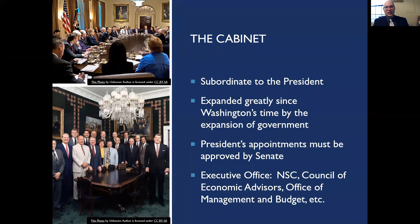The cabinet is the group of advisors subordinate to the president — basically the heads of the different formal departments: the Department of Defense, Department of State, Department of the Interior, and so on. It's a far larger body now than in Washington's time because there are more departments. We have nuclear weapons now, so there's a Department of Energy to deal with things like that. The president appoints people to the cabinet, but these appointments have to be approved by the Senate.